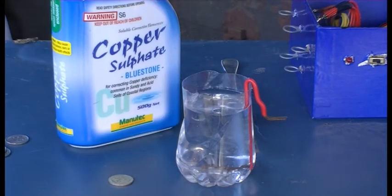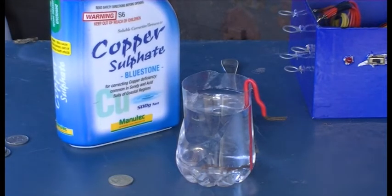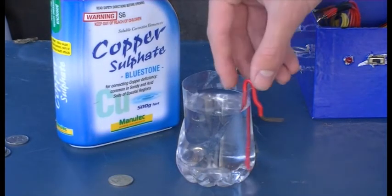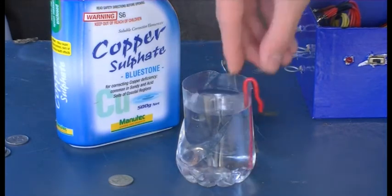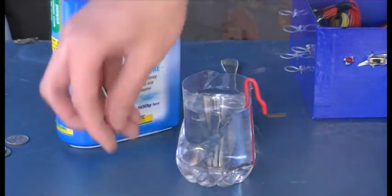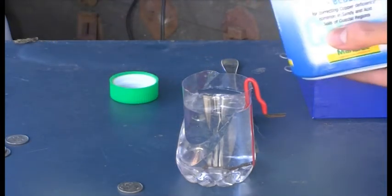Alright, so to get this done we're going to use copper sulphate as the electrolyte which will provide the copper two ions to transfer the copper from the anode to the cathode which will be this nice piece. Let's get it out.